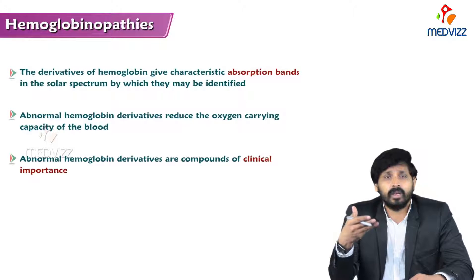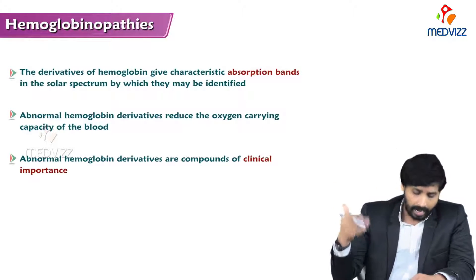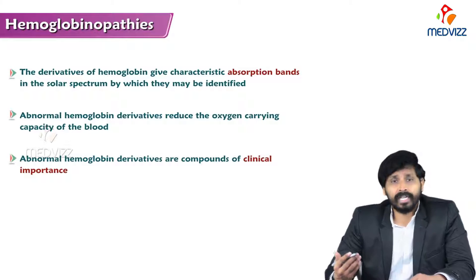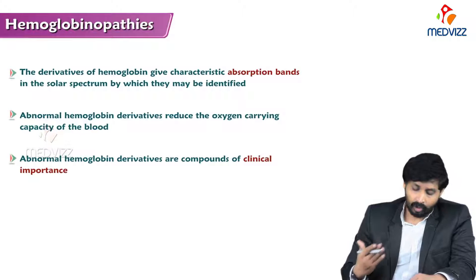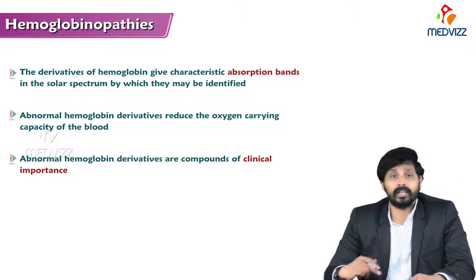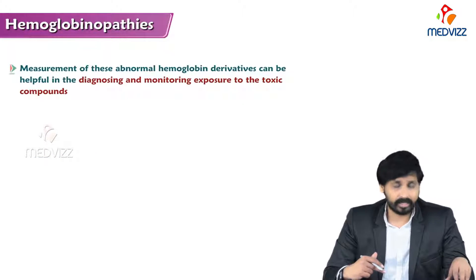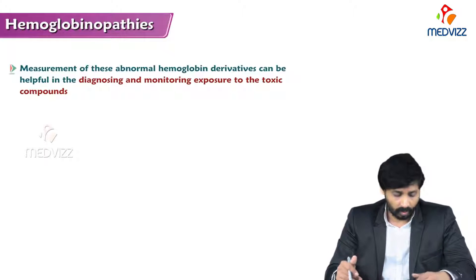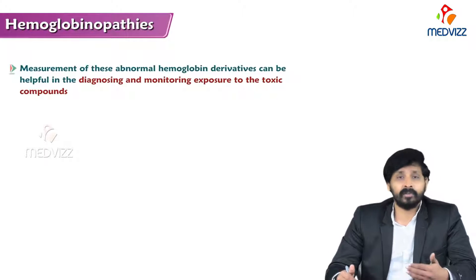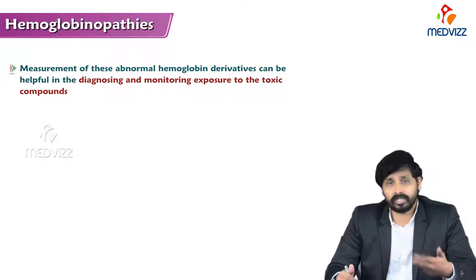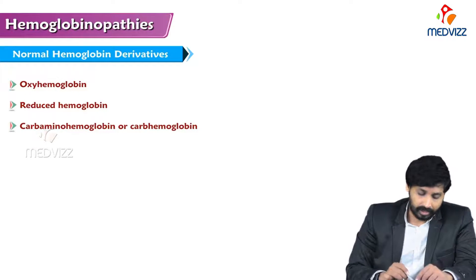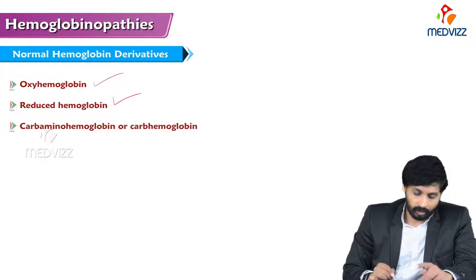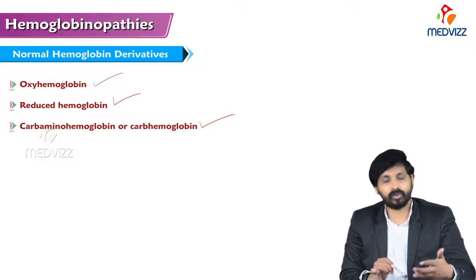The derivatives of hemoglobin give characteristic absorption bands in the solar spectrum, by which they may be identified. Abnormal hemoglobin derivatives reduce the oxygen-carrying capacity of the blood and are compounds of clinical importance. Measurement of these abnormal hemoglobin derivatives can be helpful in diagnosis and monitoring exposure to toxic compounds.